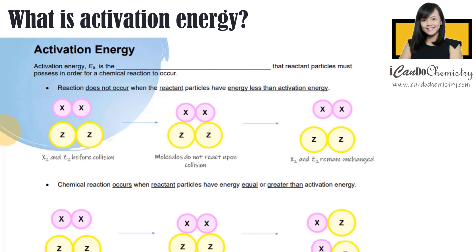So now when will chemical reaction occur? A chemical reaction will only occur when the particles move with enough energy to react, and this energy we call activation energy.